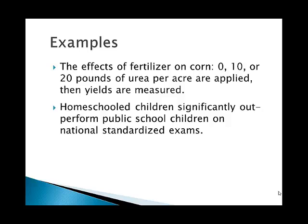Here's another example. Homeschooled children significantly outperform public school children on national standardized exams — this is actually a true statement. Is this an experiment or an observational study? This is an observational study because we are not taking a selection of children, imposing homeschooling on some and public schooling on others, and observing differences in test scores. On the contrary, families are choosing on their own whether to homeschool or use private or public schools, and we come in after that choice is made and observe the pattern that already exists. The fertilizer example is an experiment; the homeschooling example is an observational study.